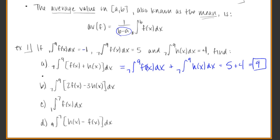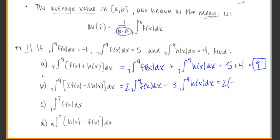For the next part, knowing we can pull constants out, we get 2 times the integral from 7 to 9 of f dx, minus 3 times the integral from 7 to 9 of h dx. That's 2 times 5, minus 3 times 4, which gives an overall answer of negative 2.